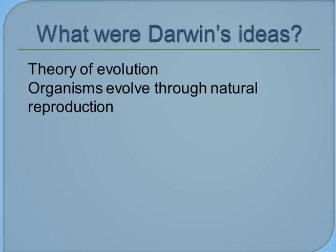So now that we know what classifying systems are, what were Darwin's ideas? Darwin came up with the theory of evolution. He believed that all organisms evolved through a process called natural selection.